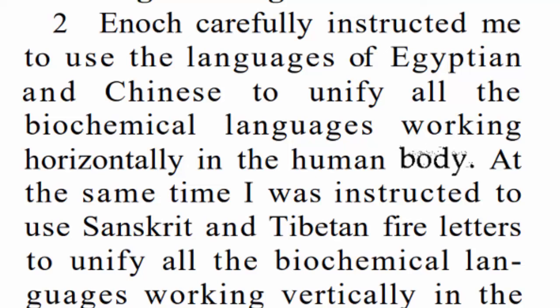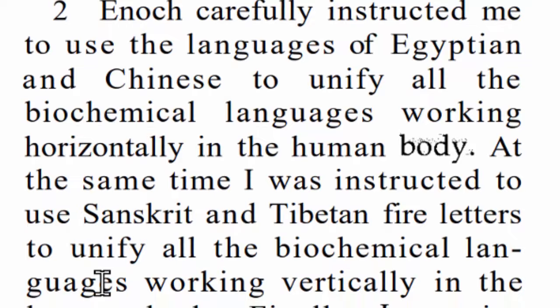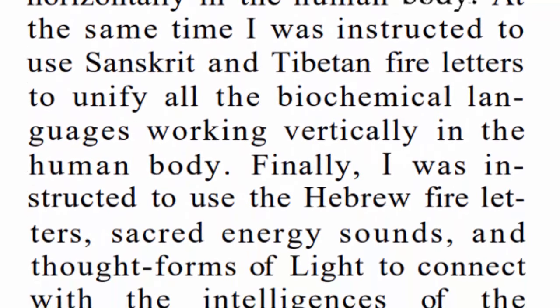It says Enoch carefully instructed me to use the languages of Egyptian and Chinese to unify all the biochemical languages working horizontally in the body. So these two languages, Egyptian and Chinese, are working with the body horizontally, whereas the others we'll see work vertically. It says at the same time, I was instructed to use Sanskrit and Tibetan bio-letters to unify all the biochemical languages working vertically in the human body. So those four are unique in that they are about the body, which adds insight when we think about how the languages were diversified.